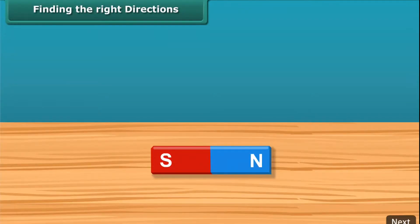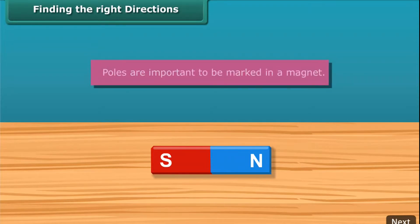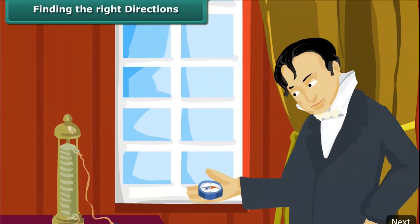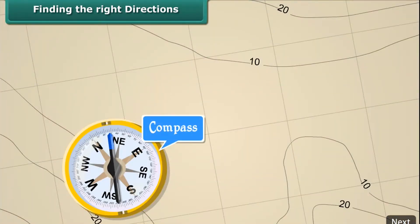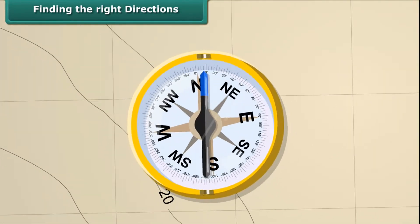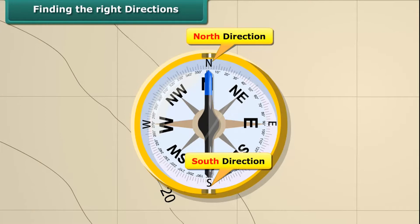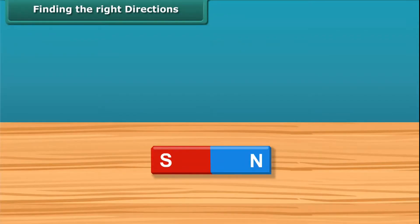Finding the right directions. Once you know about the poles of a magnet, you should also be able to mark the location of the poles. To find directions, we use a compass. This compass has a needle that keeps moving in all directions, but when steadied, always points to the north. This helps us find directions accurately. This is why we need to mark the poles of a magnet.